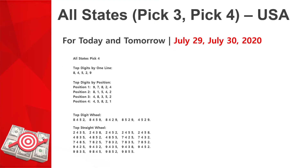All States PIC 4 — Top Digits by one line: 8, 4, 5, 2, 9. Top Digits by position — Position 1: 9, 7, 8, 2, 4.